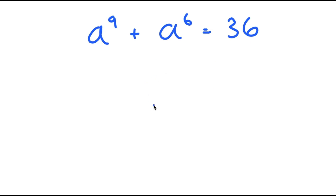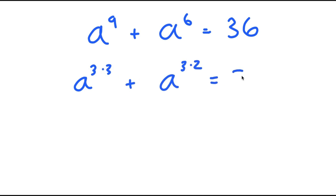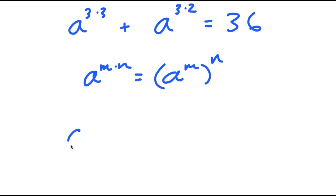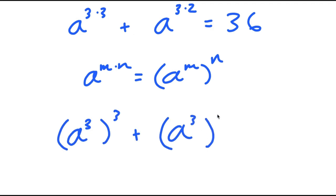To solve this, I'm going to first start by rewriting a to the power of 9 as a to the power of 3 times 3, and rewriting a to the power of 6 as a to the power of 3 times 2. Now, if I have something in the form a to the power of m times n, this is equal to a to the power of m to the power of n. So a to the power of 3 times 3 turns to a to the power of 3 to the power of 3, and a to the power of 3 times 2 turns to a to the power of 3 to the power of 2.